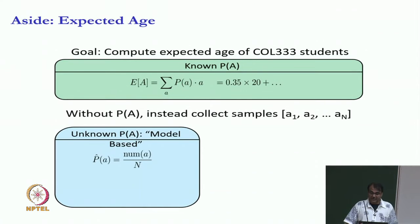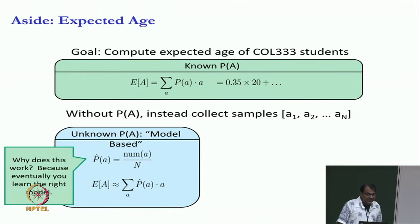So this you would do where you would compute P hat of A, let us say hat means that this is my estimated version and you compute P hat of A, number of times A came divided by the total number. And now that you have the probability distribution, you can compute an estimated expectation by simply taking the formula and putting in P hat instead of P. And in the limit of infinite samples, this gives you the right expectation. In the case in the limit of all of your ages being sampled, this gives you the right number.